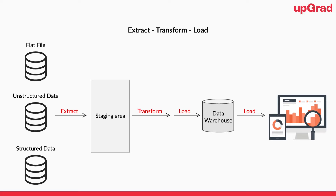ETL is not new — we have been using it in companies for many, many years. Let's understand the three phases: Extract, Transform, and Load. Extract means we should be able to read data from different kinds of sources — a flat file, a database, a distributed system, or any continuous stream of data. Once the data is extracted, many times the data we are collecting is not good enough; we might have to filter some data out, or sometimes remove PII data — Personally Identifiable Information.